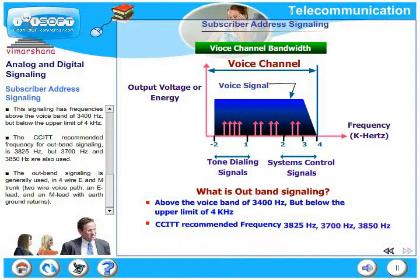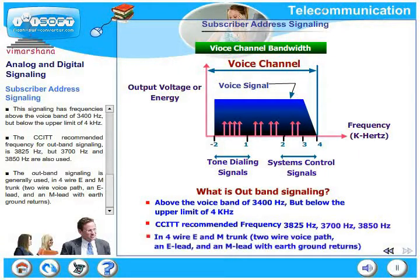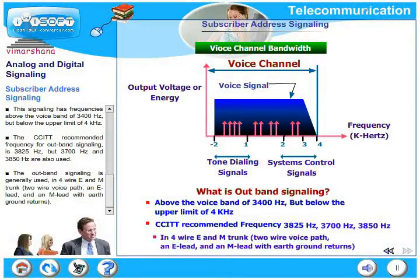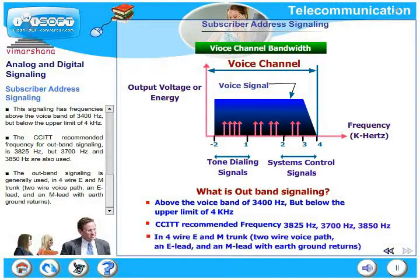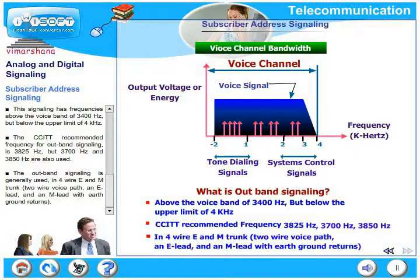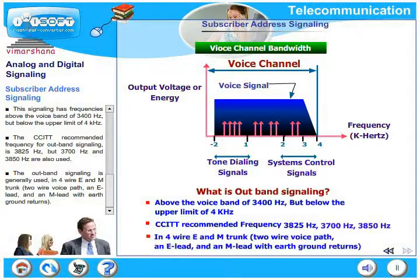Out-of-band signaling is generally used in four-wire E and M trunk circuits. E and M refers to two wires for the voice path, an E lead and an M lead, plus an earth ground return.